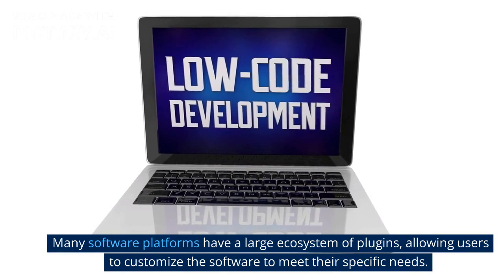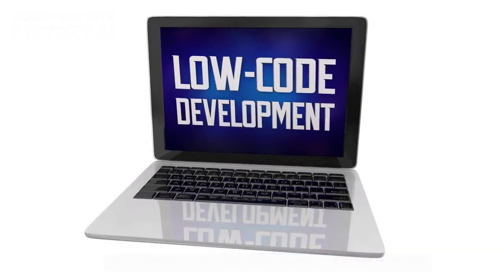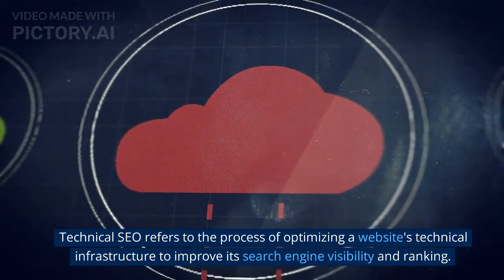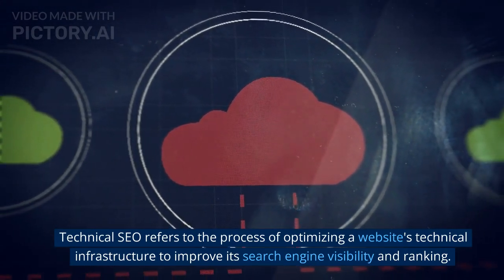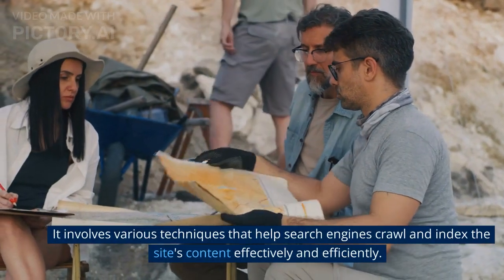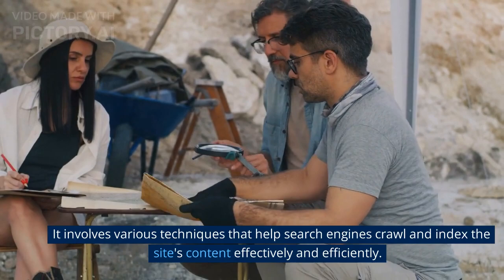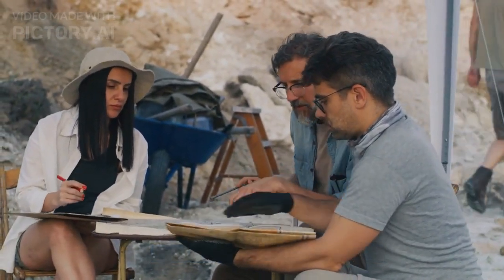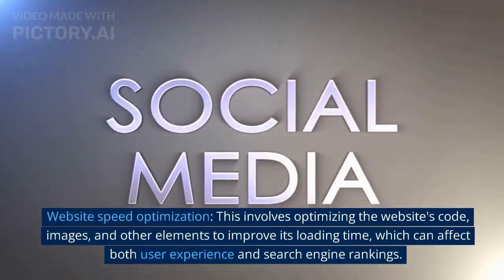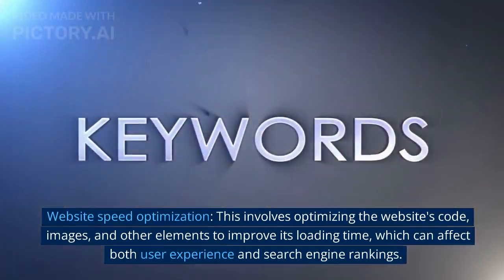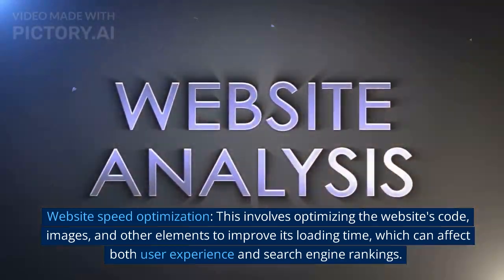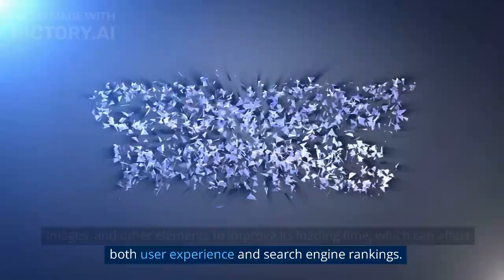Technical SEO refers to the process of optimizing a website's technical infrastructure to improve its search engine visibility and ranking. It involves various techniques that help search engines crawl and index the site's content effectively and efficiently. Website speed optimization involves optimizing the website's code, images, and other elements to improve its loading time, which can affect both user experience and search engine rankings.